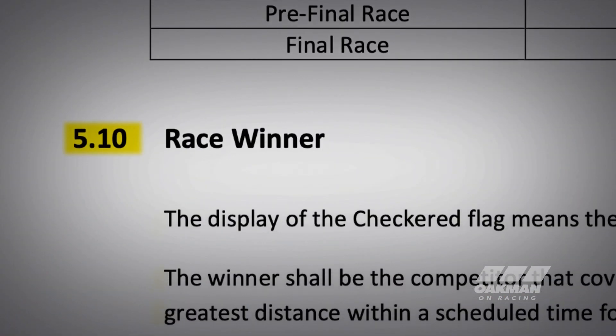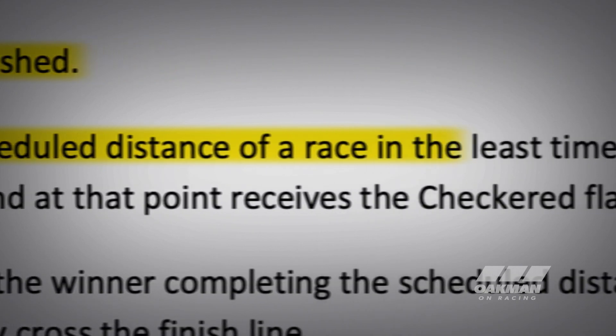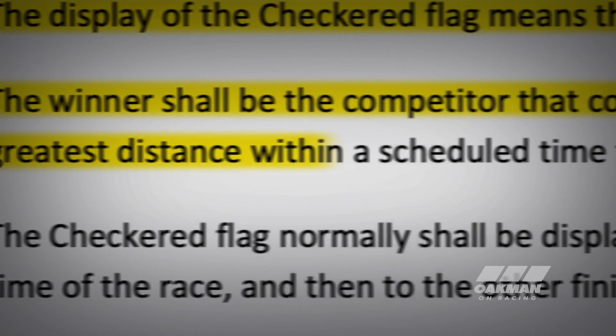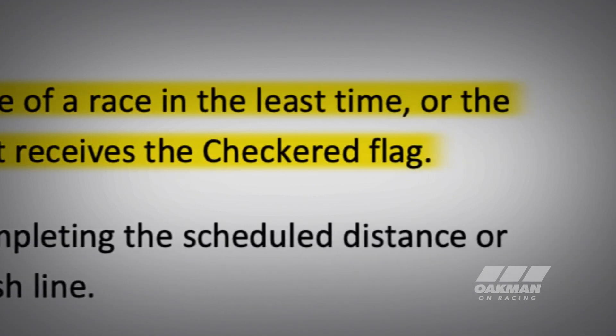So there's a perfect example — we have the information, the future action, the description of what it means, and the punishment below it. An example of a rule that has the punishment self-evident within it is race winner, section 510. The display of the checkered flag means the race is finished. The winner shall be the competitor that covers the scheduled distance of a race in the least time, or the greatest distance within a scheduled time, and at that point receives the checkered flag. It describes the minimum requirement for you to be the race winner — if you don't fulfill those requirements, you're simply not the race winner, and no separate punishment needs to be issued. There are situations where you can fulfill those requirements but still be disqualified for breaking another rule, such as if you get a black flag or a meatball — at that point, that's the end of your race.